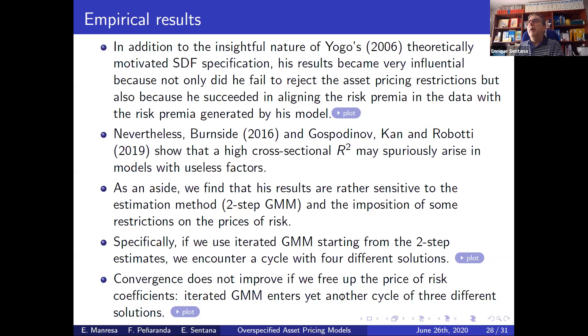Yogo used a theoretically-based specification, so he wasn't fishing for factors. His paper became very influential, partly for this plot where the horizontal axis shows model-generated risk premia for each of the 25 Fama-French portfolios, and the vertical axis shows the actual means for those excess returns. There is sampling variability, but he provided a very good fit according to this metric. However, Burnside and Gospodinov, Kan and Robotti show this plot could also arise with useless factors.